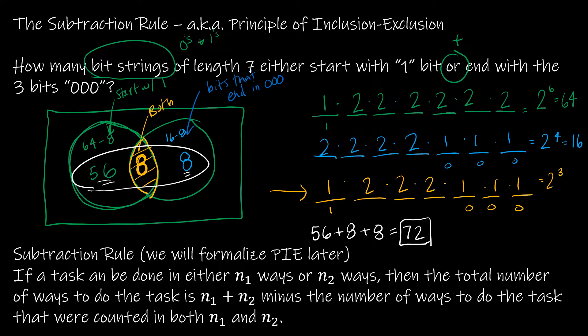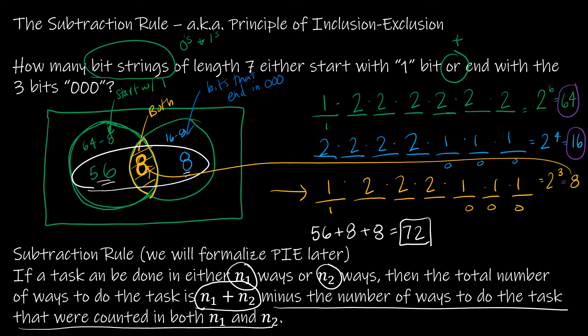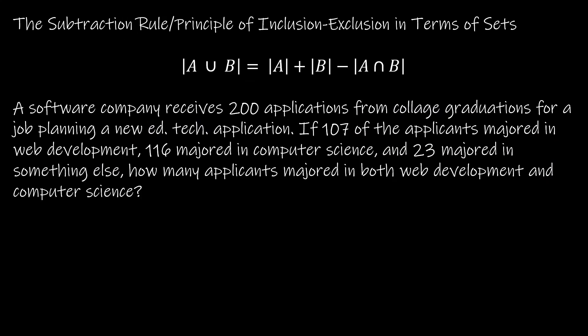Now, it's not feasible for me to do that, especially if I'm dealing with, say, 5 sets or 6 sets. So instead, we're looking at the subtraction rule that says if you can do a task in N1 ways or N2 ways, then the total number of ways to do the task is adding those two ways together and then subtracting the number of ways that were counted twice. So instead of doing 56 plus 8 plus 8, I can say 64 plus 16 minus 8. So I'm subtracting the number of ways that were counted twice and again, that gives me 72.